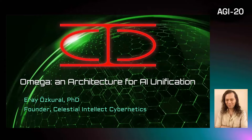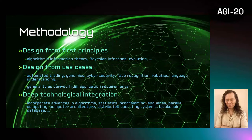OMEGA AGI architecture is geared towards data science automation and intended for human-level performance. It is based on Schmidhuber's Alpha architecture and Schmidt Weber's Gödel machine architecture. We designed OMEGA from first principles to theoretically guarantee human-level performance.